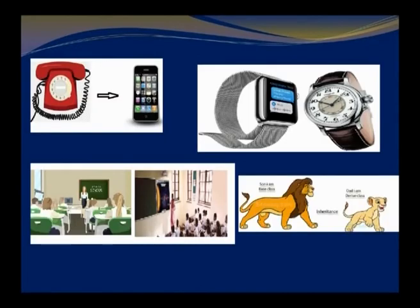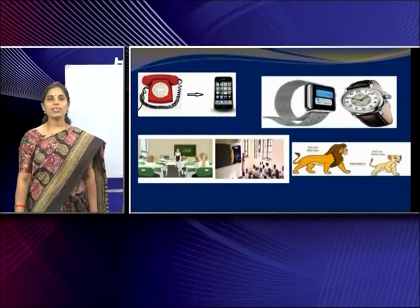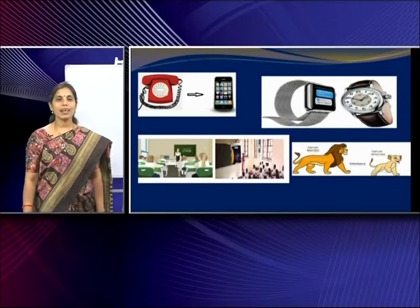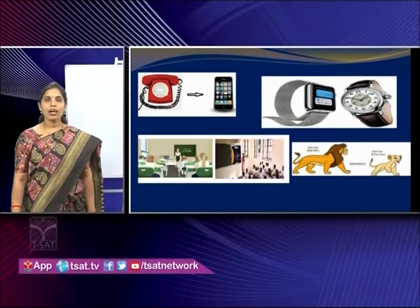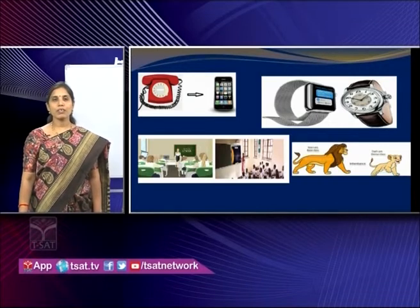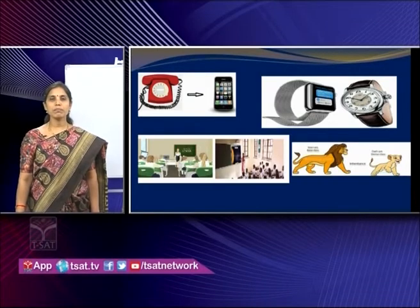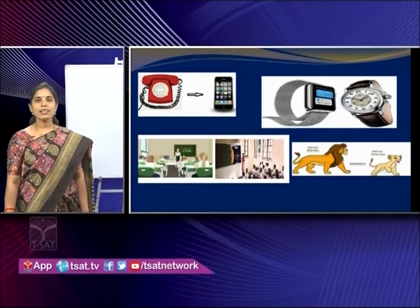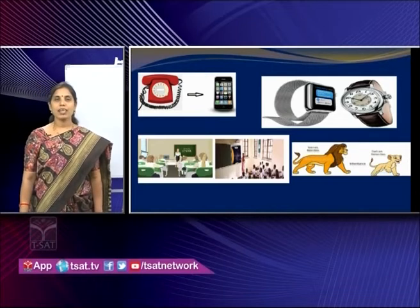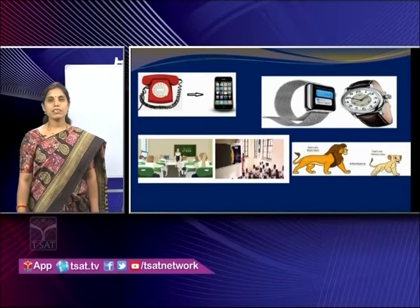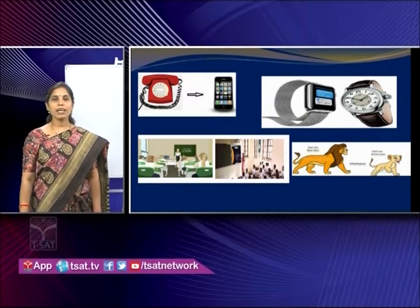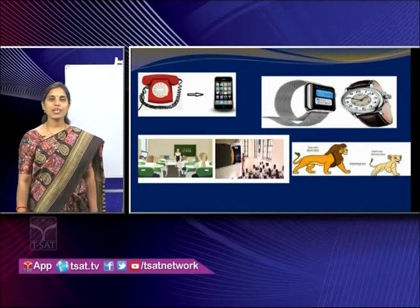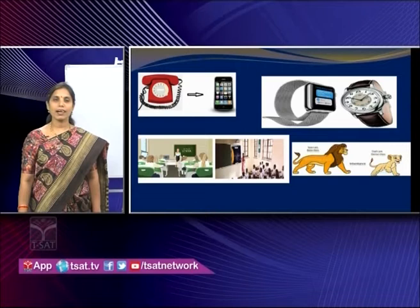Look at this slide. In the first picture we have two types of phones — landline and smartphone. A landline phone is used to call. A smartphone also has a basic purpose of calling, but we have added other features: we can text, play video games, browse the internet, send emails, and many more features along with the basic calling functionality taken from a landline phone.